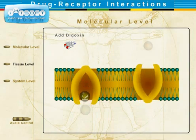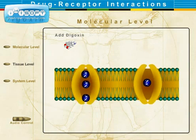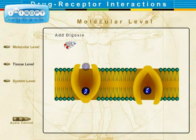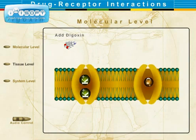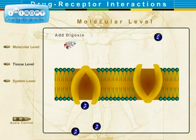Digoxin also slows the heart rate, which allows more filling of the heart and improves cardiac output, hence its use in treating congestive heart failure.